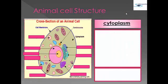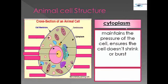The next part is the cytoplasm. Cytoplasm maintains the pressure of the cell and ensures the cell doesn't shrink or burst. In other terms, it is called the fluid matrix.